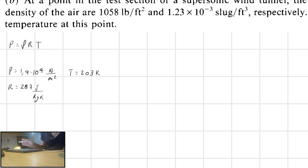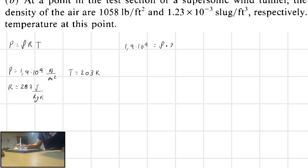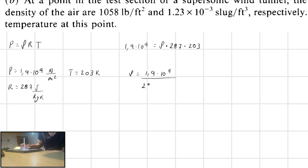So all we have to do — this is a pretty simple exercise — is to place the values into the equation. 1.9 times 10 to the 4th power equals the density (the unknown) multiplied by 287, times the temperature, which is 203. That means the density equals 1.9 times 10 to the 4th power divided by 287 times 203.